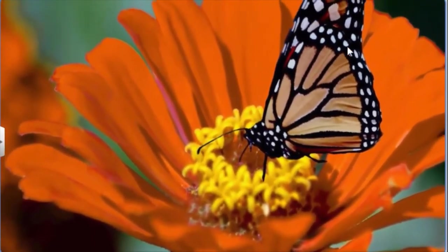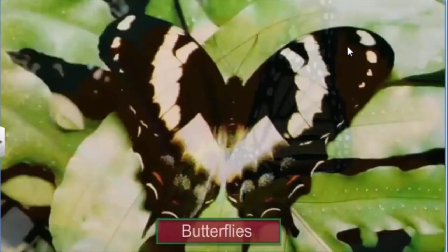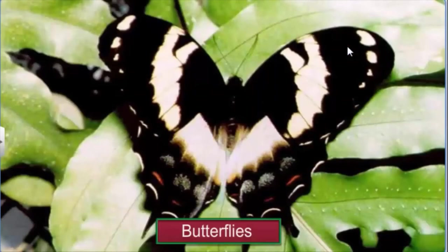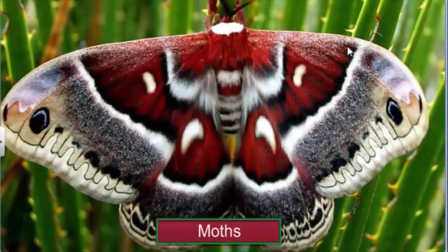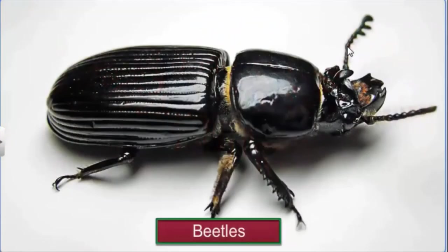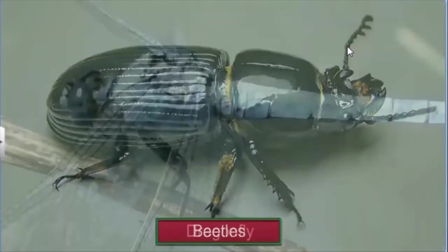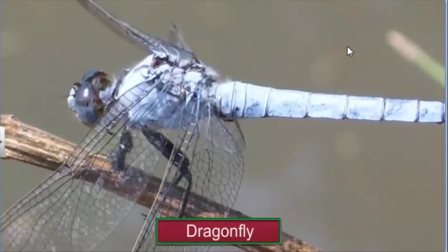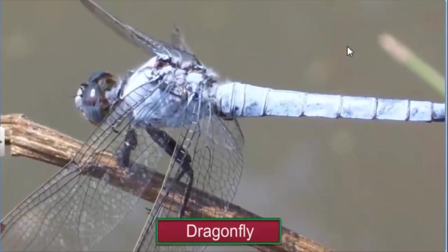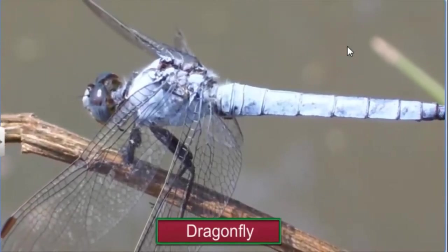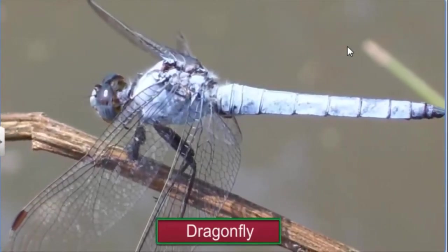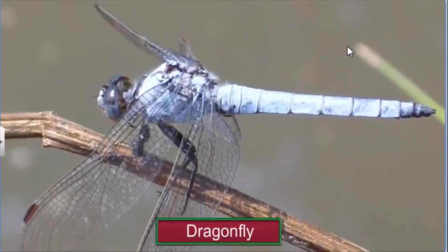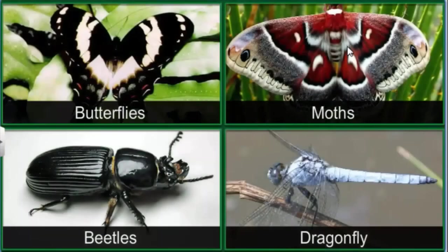Along with large animals, hundreds of species of butterflies, moths, beetles, and one species of dragonfly were included in the list of protected animal species through the Wildlife Act of 1980 and 1986. Six species of plants also found their way into this list in 1991.